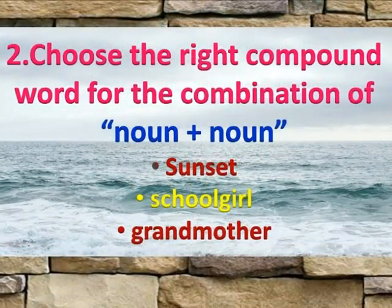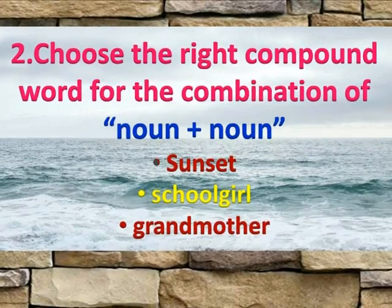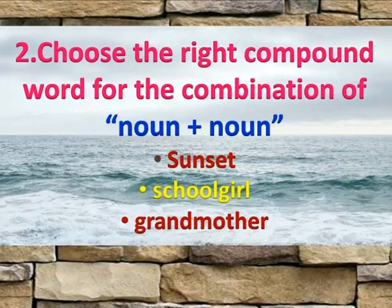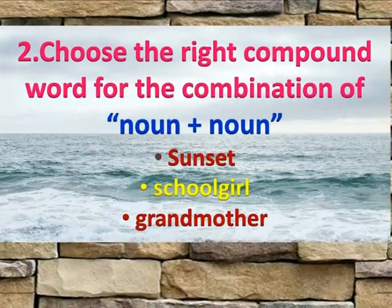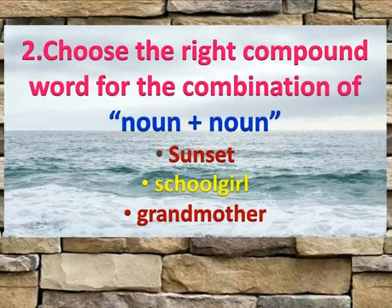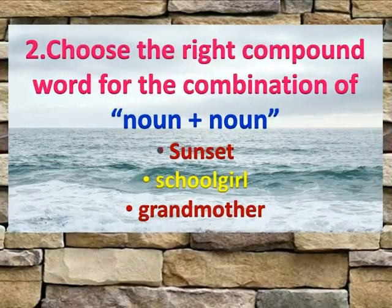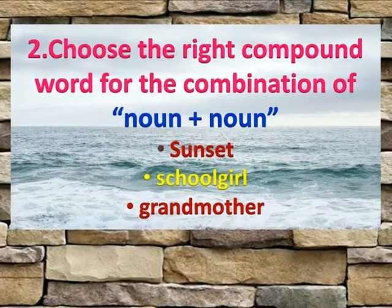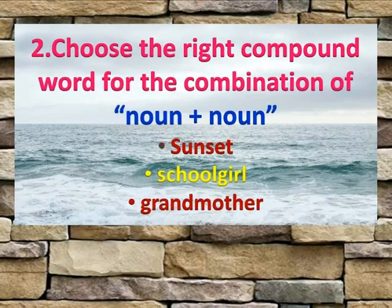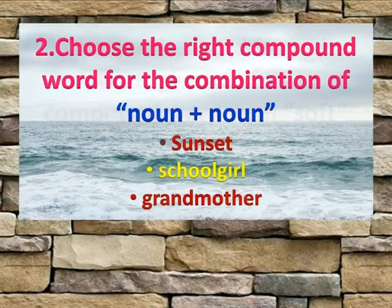The second type of question is to choose the right compound word for a given combination — for example, noun plus noun. The choices given are 'sunset,' 'schoolgirl,' and 'grandmother.' The right option is 'schoolgirl' with the structure noun plus noun, as both 'school' and 'girl' are nouns. In 'sunset,' 'sun' is a noun but 'set' is a verb. In 'grandmother,' 'grand' is an adjective and 'mother' is a noun.